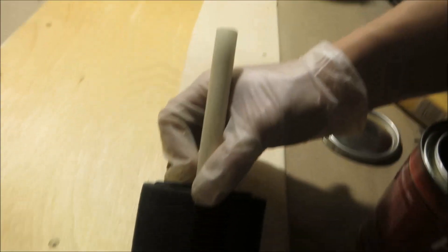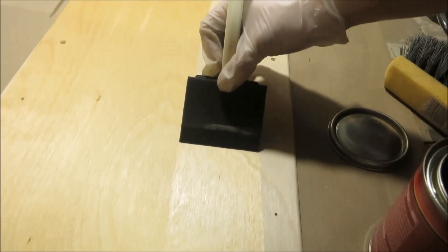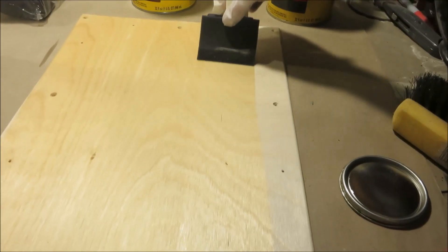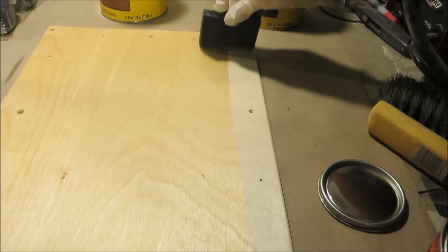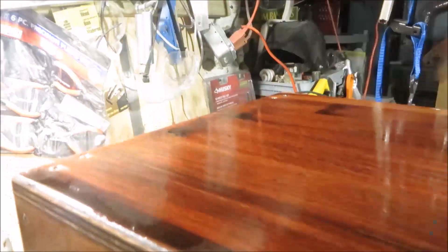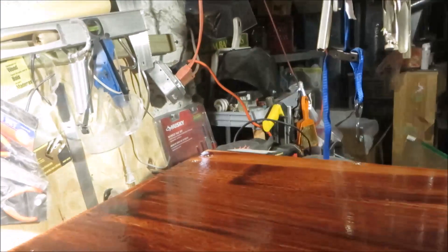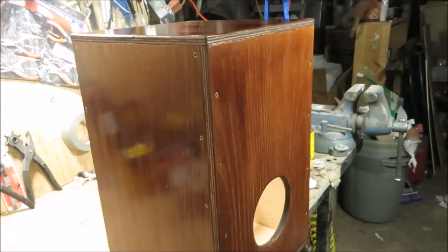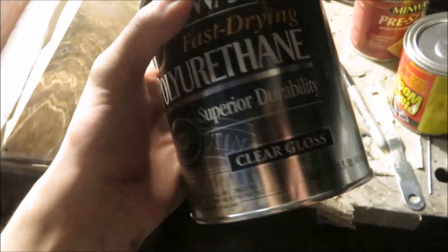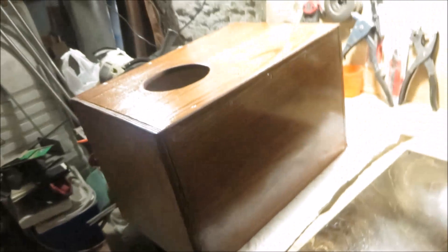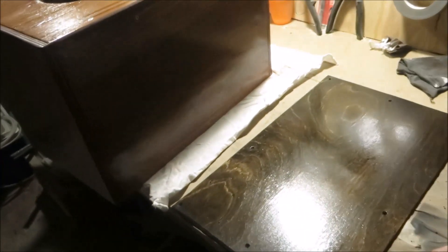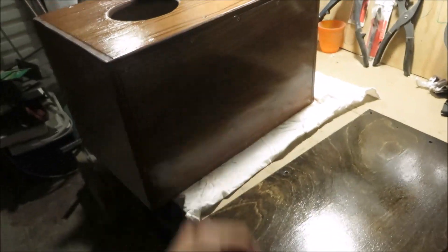I start with some pre-stain conditioner. This just helps the stain to absorb more effectively and it makes it so that it's not blotchy. Then after about 10 minutes, I wipe that stuff off and I brush the stain on with one of these squishy foam brushes. Then I'll let that soak for about 15 minutes and then I'll wipe off the excess with a rag. And finally, I give it a coat with some polyurethane and that should be it for the build. I just got to wait for this to dry and then I can put the face plate on. We should be able to play.